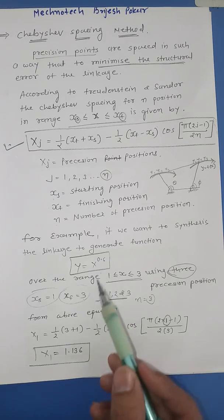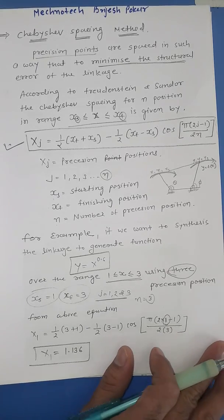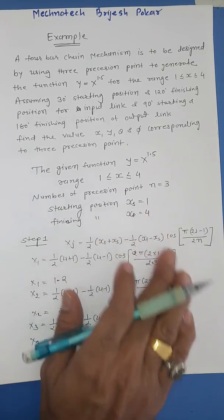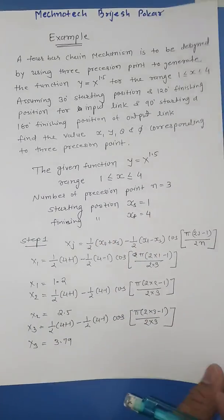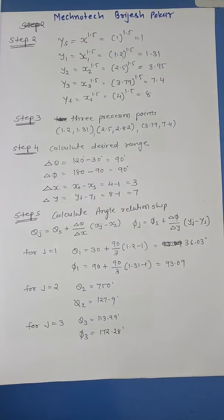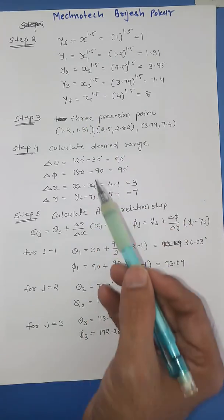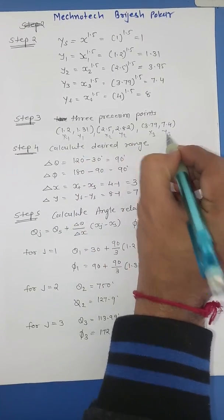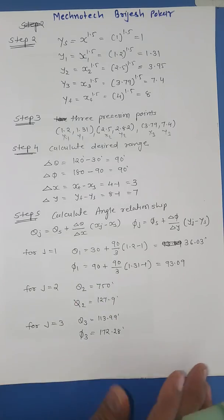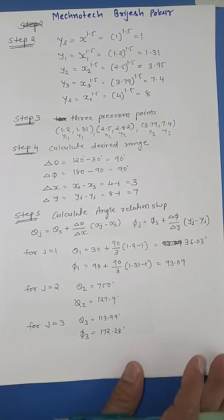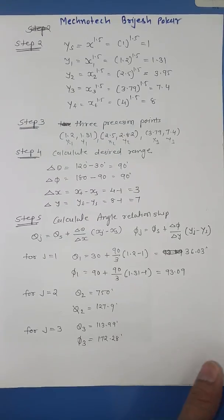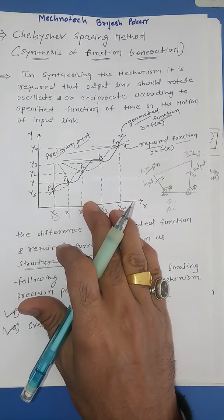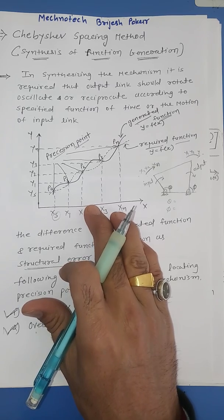This is the theory of the Chebyshev spacing method. Next time we will see an example for this method where we have to find x1, x2, x3, y1, y2, y3, delta theta, delta phi, and finally theta1, phi1, theta2, phi2, theta3, phi3 — as shown in the table. If you like this video, press the like button, share it with your friends, and subscribe to my YouTube channel for more videos. Thank you.